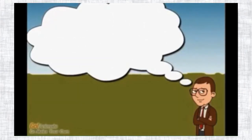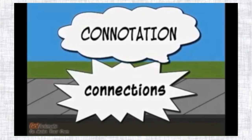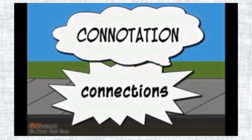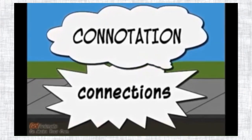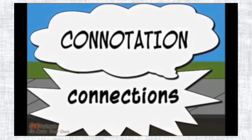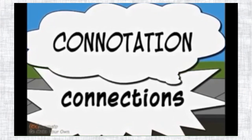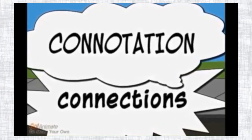Authors use connotation to improve their writing by using words that give ideas even beyond their literal meaning. Connotation is the connections our mind makes with words — you can remember that as connotation and connections both begin with C.